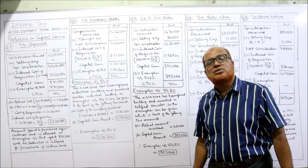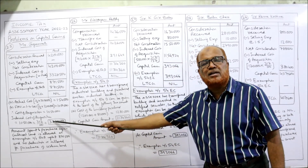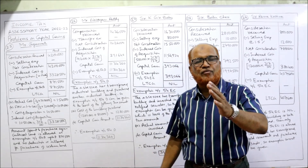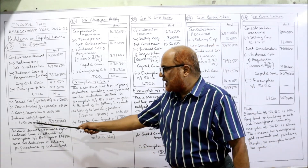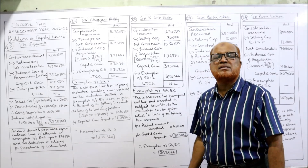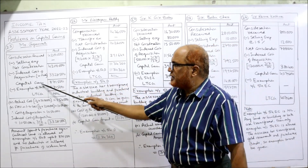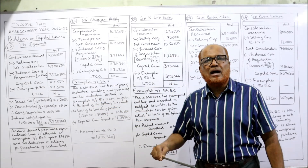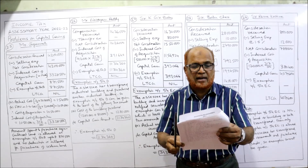Now we find the indexed cost of acquisition: 10 lakh 50,000 multiplied by the current year index 317, divided by 100 — because for any asset purchased before 1/4/2001 the index number is taken as 100. So 10 lakh 50,000 × 317 / 100 = 33 lakh 28,500. This is the indexed cost of acquisition. Deducting from 42 lakhs, we get capital gain of 8 lakh 71,500.